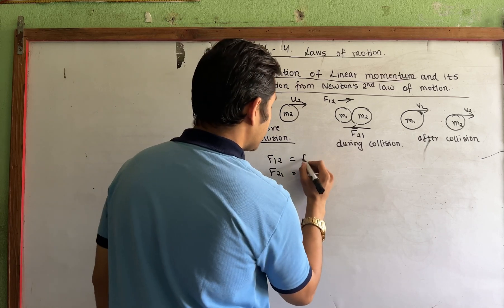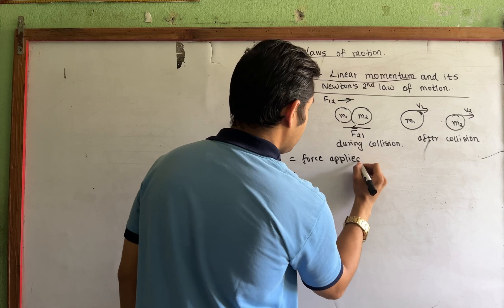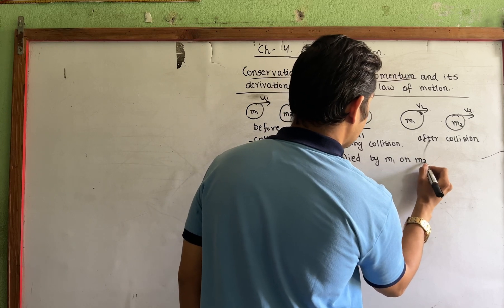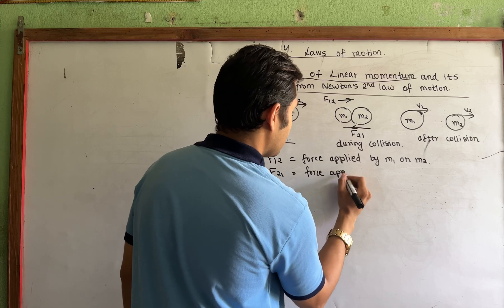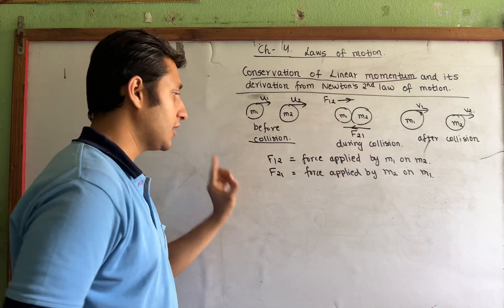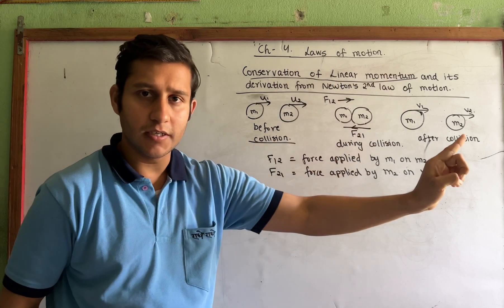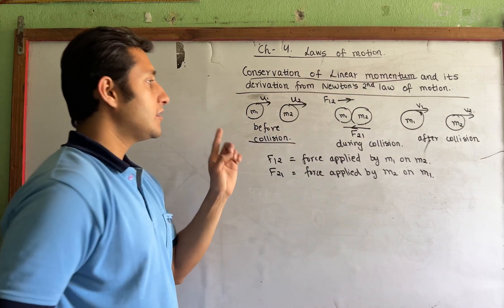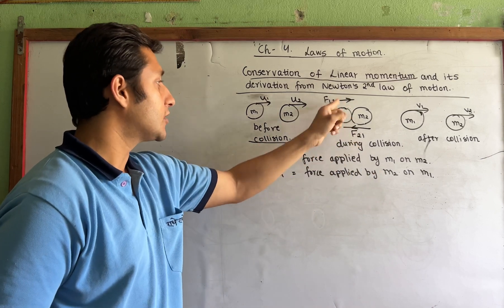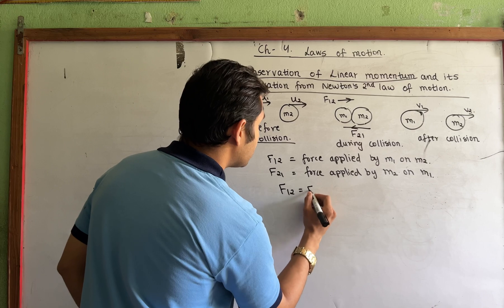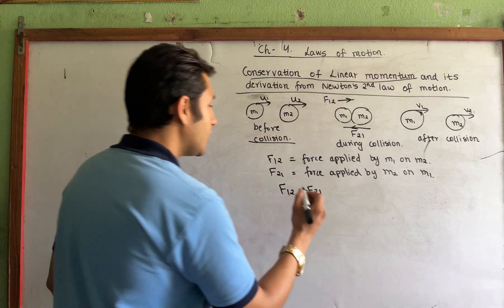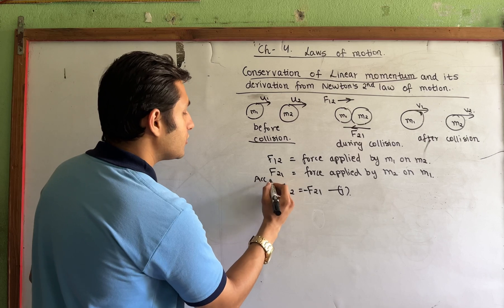F1 to 2 is force applied by M1 on M2. F2 to 1 is force applied by M2 on M1. What is Newton's second law? Every force has an equal and opposite reaction. It has to be equal and opposite. F1 to 2 is equal to F2 to 1, according to Newton's second law of motion.